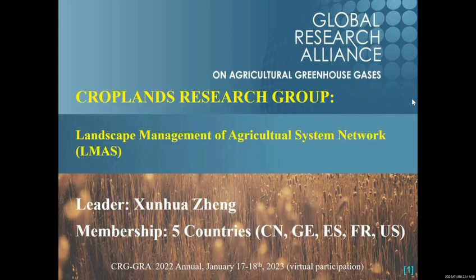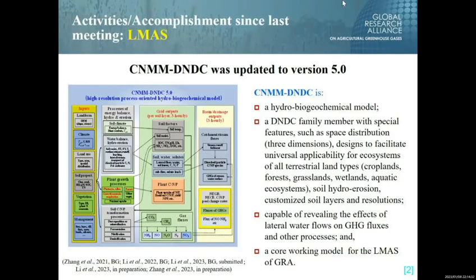Our network is landscape management of agriculture systems. At the moment, there are five countries involved in this network. So far, the major work of our network is still focusing on the development of the C-LIM-DNDC model. This is a high-resolution process-oriented biogeochemical model.